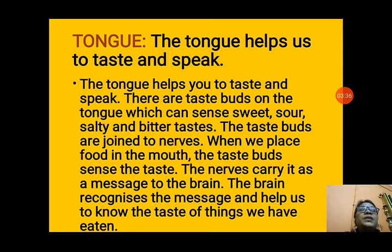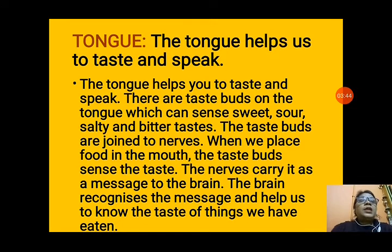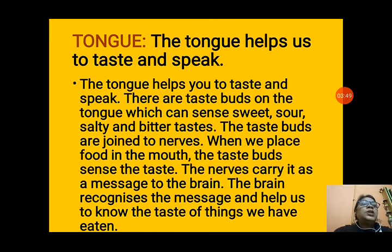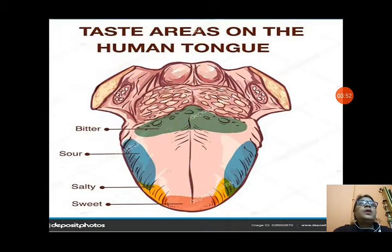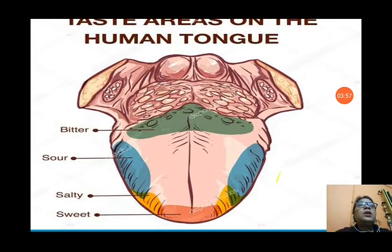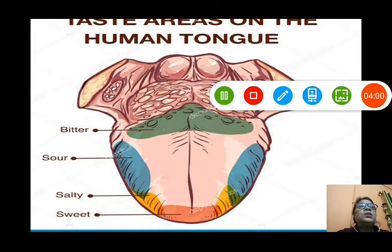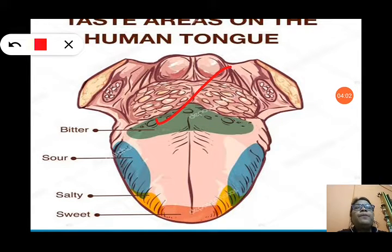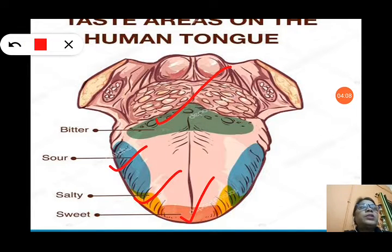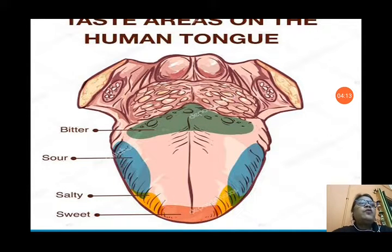The nerves carry the taste as a message to the brain. The brain recognizes the message and helps us to know the taste of the things we have eaten — whether it is sweet, sour, bitter, or salty. You can see the taste buds present in the tongue. Different types of taste buds are shown in the picture: bitter, sour, salty, and sweet, each present in different parts of the tongue.